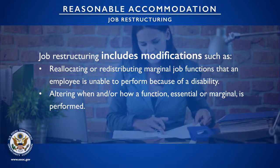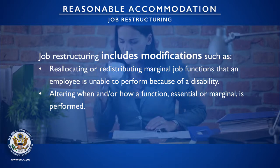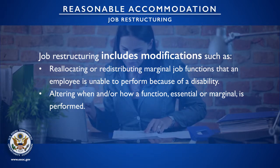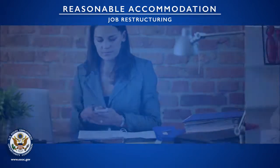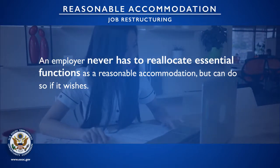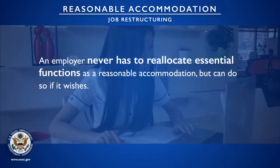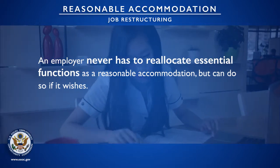Job restructuring covers reallocating marginal job functions that an employee is unable to perform because of a disability, and altering when and/or how a function — essential or marginal — is performed. An employer never has to reallocate essential functions as a reasonable accommodation, but can do so if it wishes.